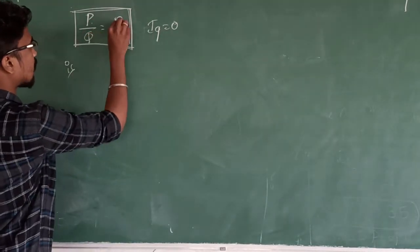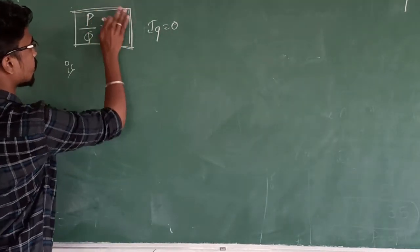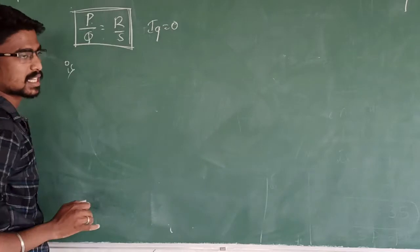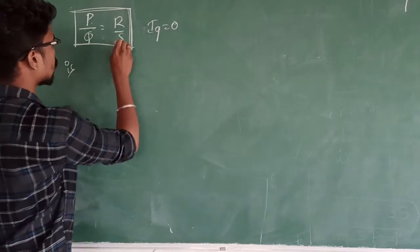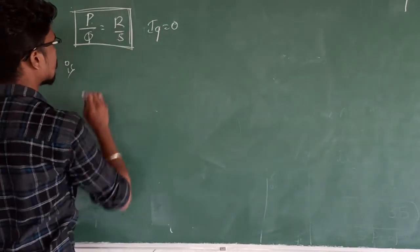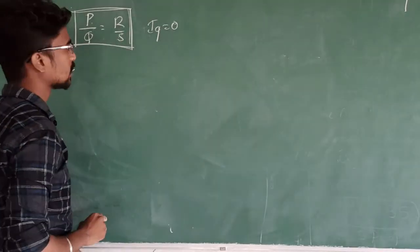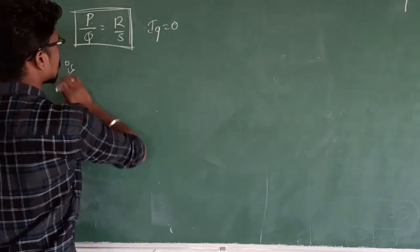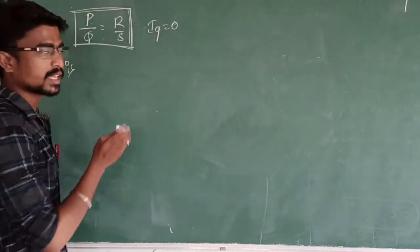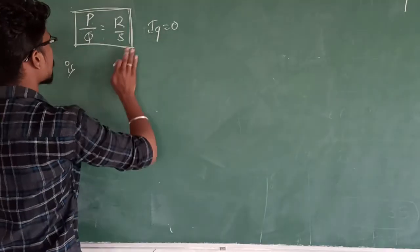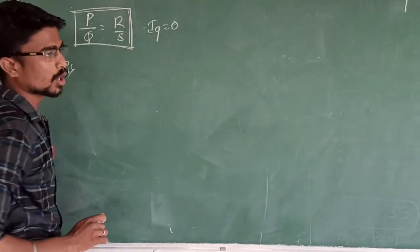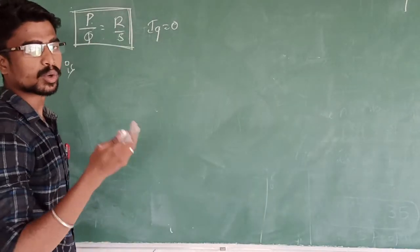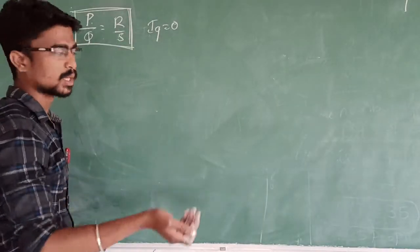Here, P, Q, and R are given resistance values and you do not know the S value. Then, by rearranging the equation, you can find out the unknown resistance value.